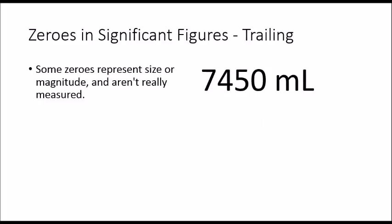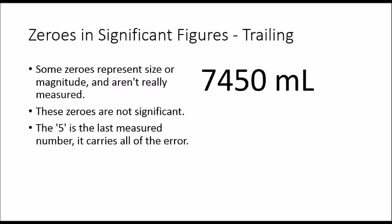Now we can have trailing zeros. Some zeros don't actually represent a measurement; they represent magnitude. So those zeros are not significant because they have not been measured. The 5 is the last measured number and it carries all of our error.